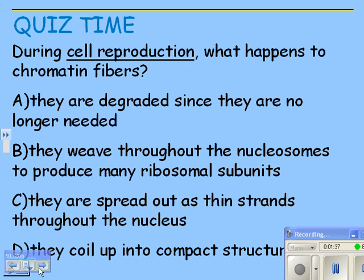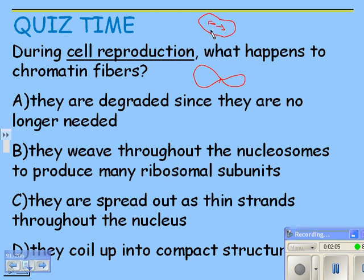During cell division, what happens to chromatin fibers? When the cell divides, you have a cell separating from another one. In order to separate the DNA — some being pulled to one side and some to the other — you want equal amounts on each side. You don't want the DNA all spread out because it's so delicate you'd break it. You want the DNA super-coiled into these chromosomes. So what happens to the chromatin fibers — that is, the DNA?